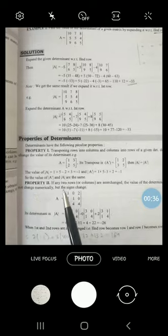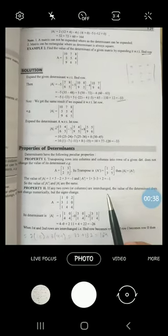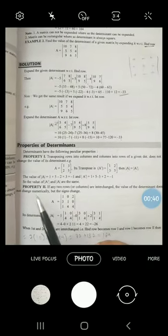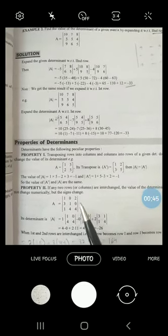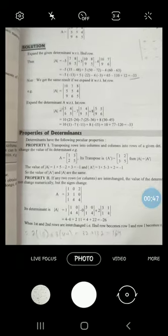Second property: if any two rows or columns are interchanged, the value of the determinant does not change numerically but the sign changes. Sometimes according to our necessity, we need to interchange the rows and columns.